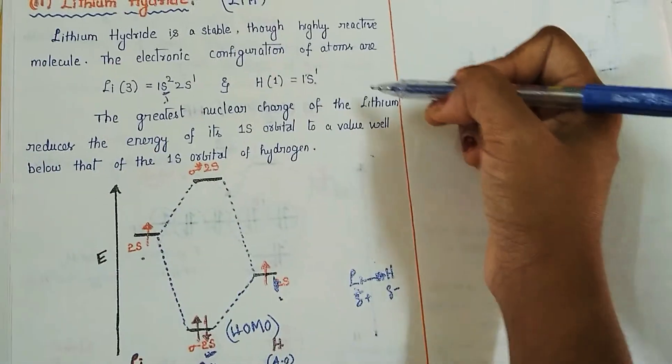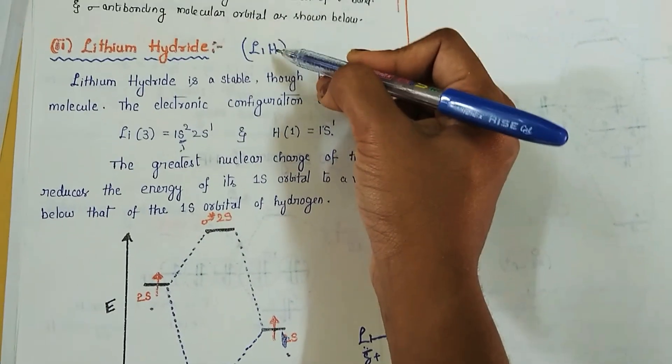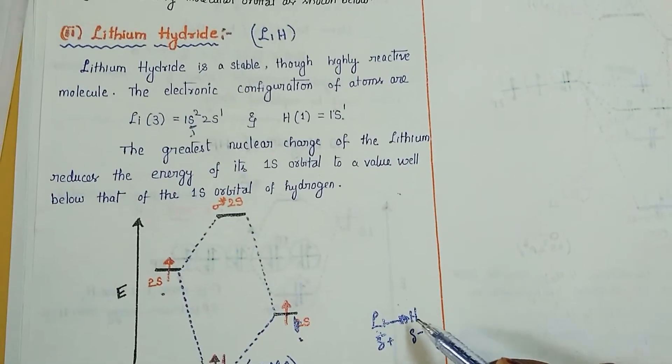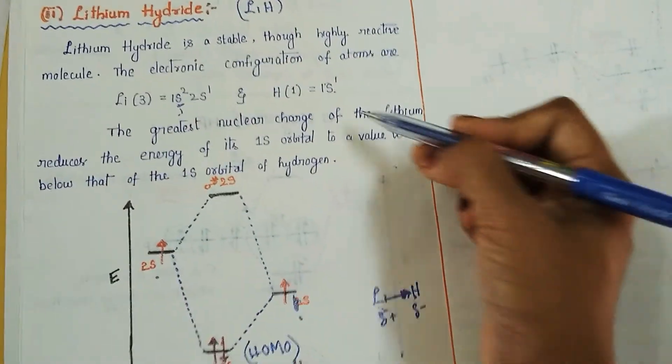So here we can notice the bond order is one and electron density is shifted towards hydrogen. So thank you for watching this video.